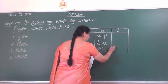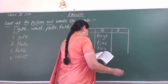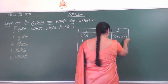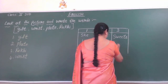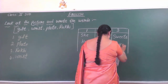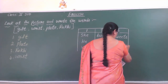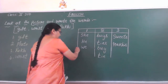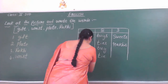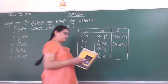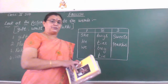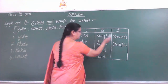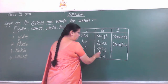The second column has more words. In the third column there is: sweets. She buys sweets — that is the example they have given. She buys sweets.